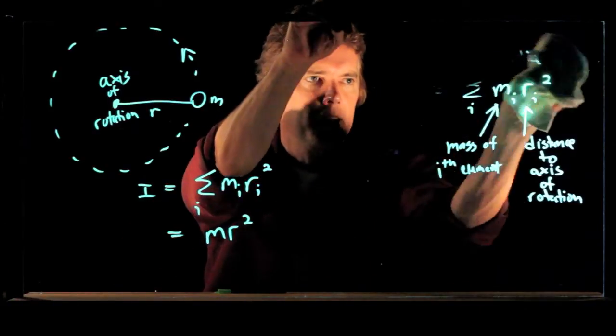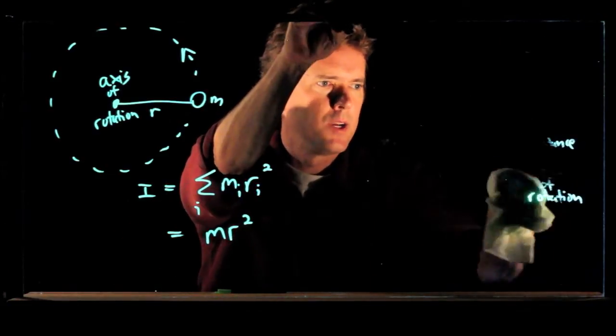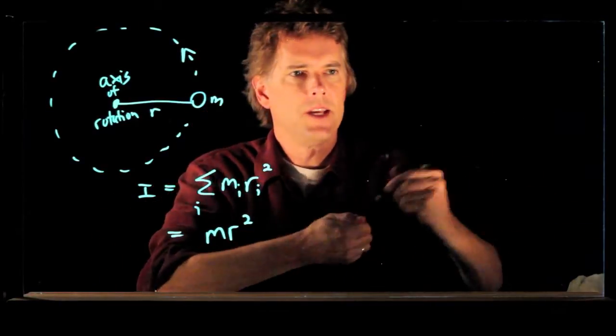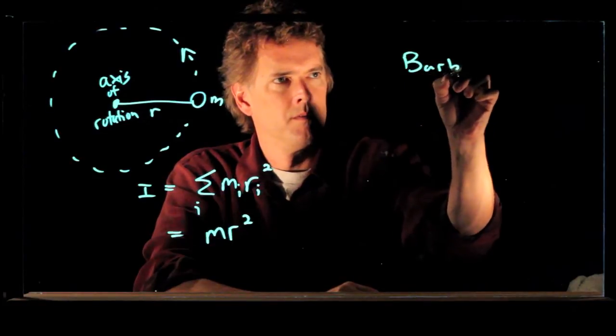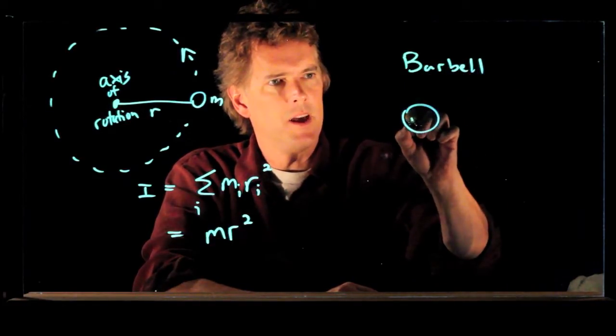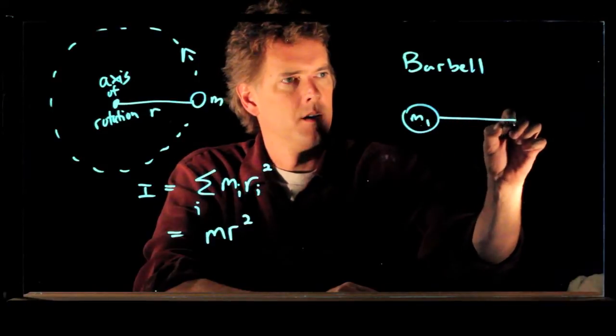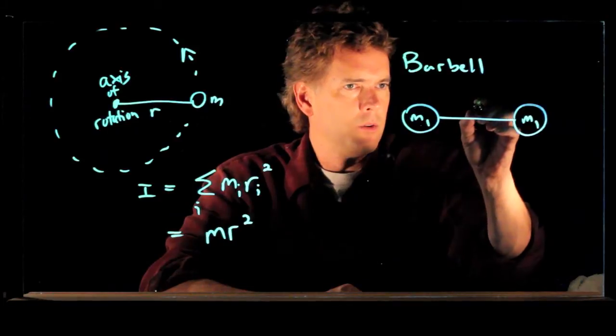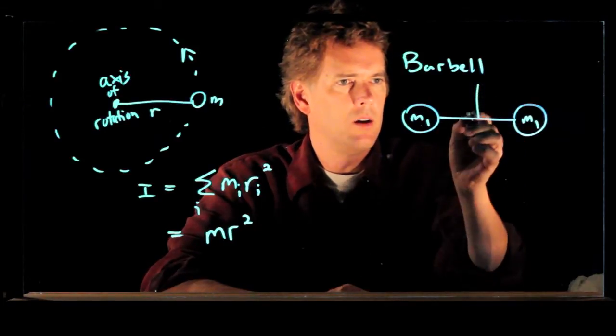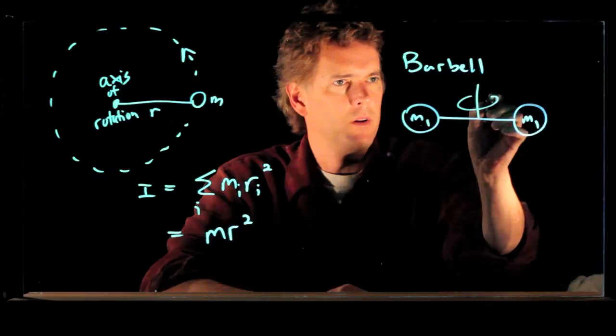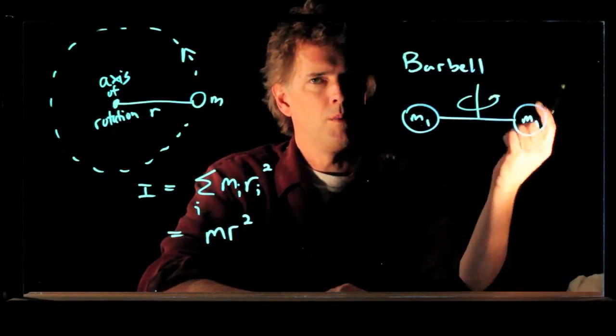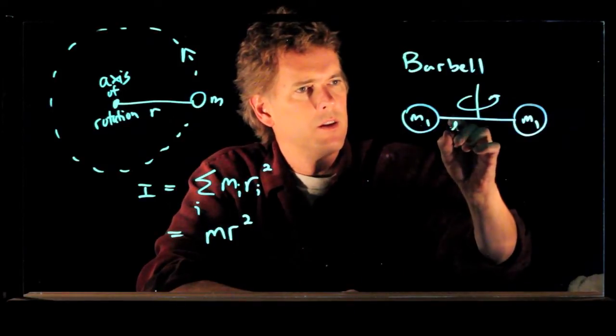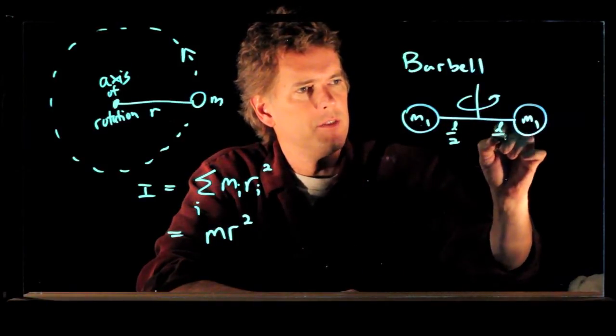But let's try it for a slightly more complicated object. Let's say we take a barbell. And we have m1 and we have m2. And we're going to suspend it from a rope. We're going to spin it. Okay, so the whole barbell is spinning around like this. And let's say that this distance is l over 2 and this distance is l over 2.